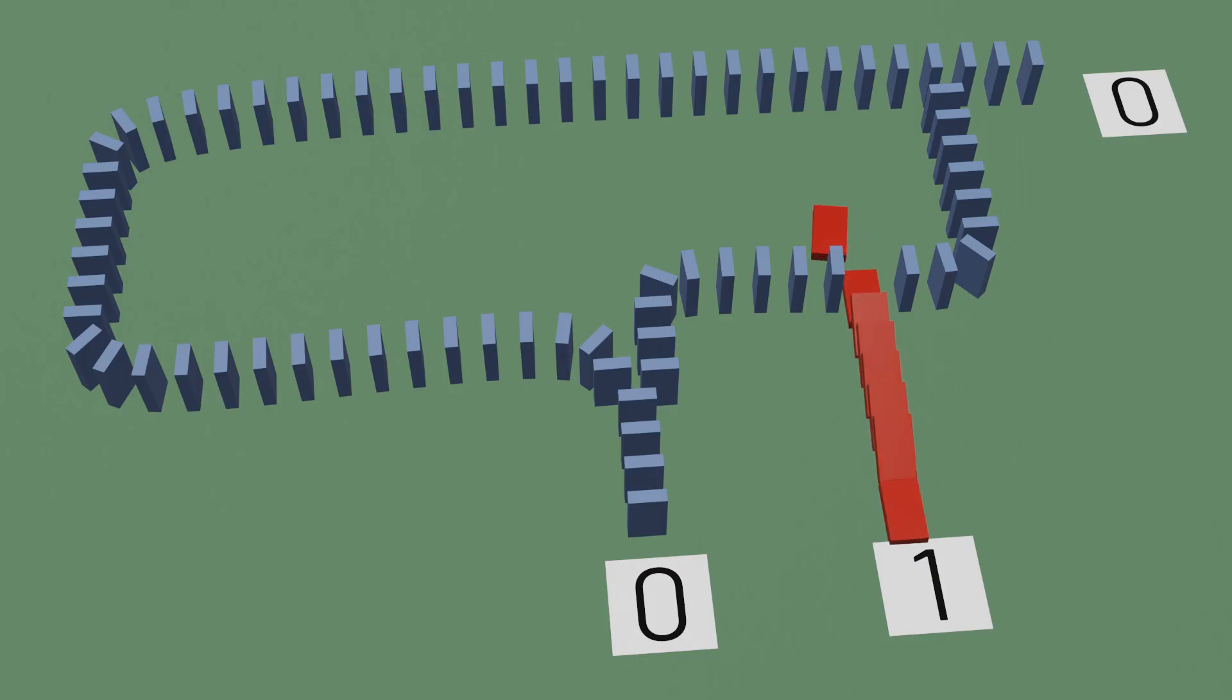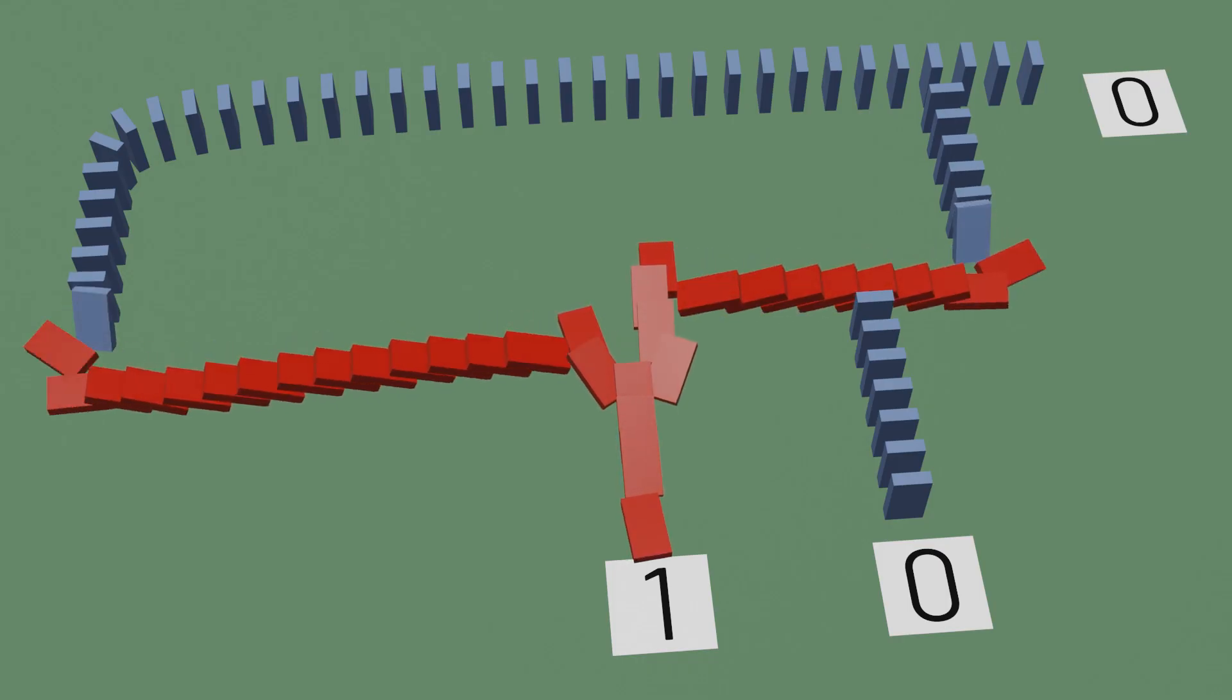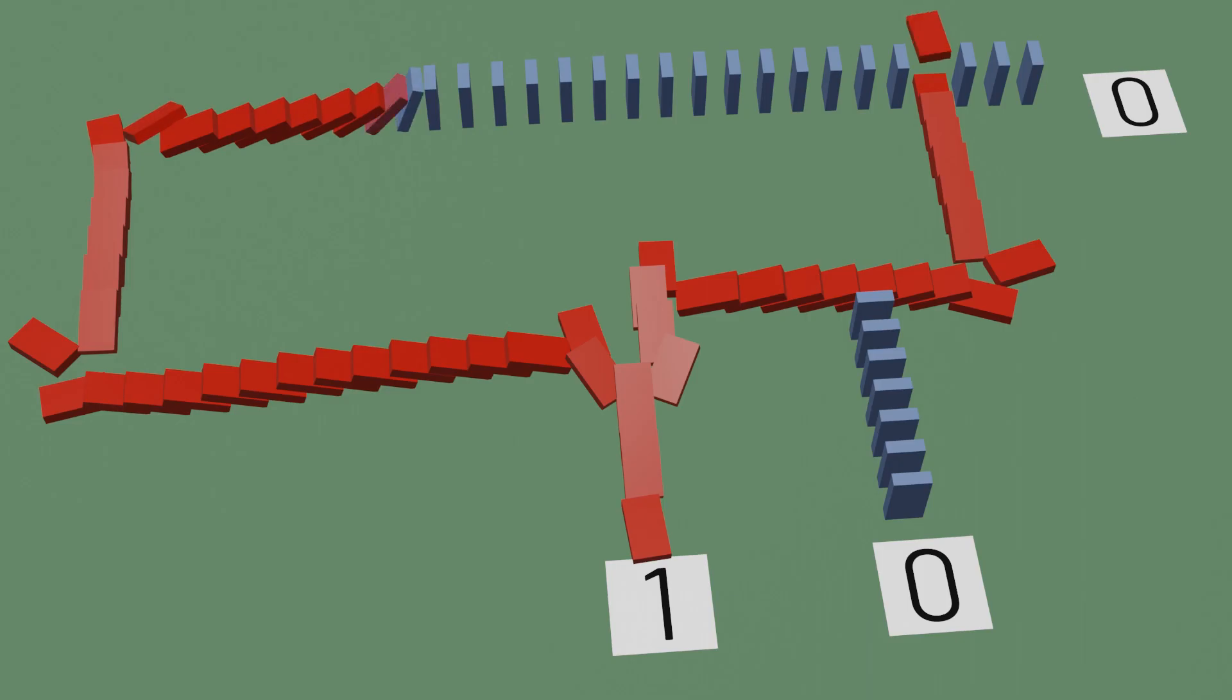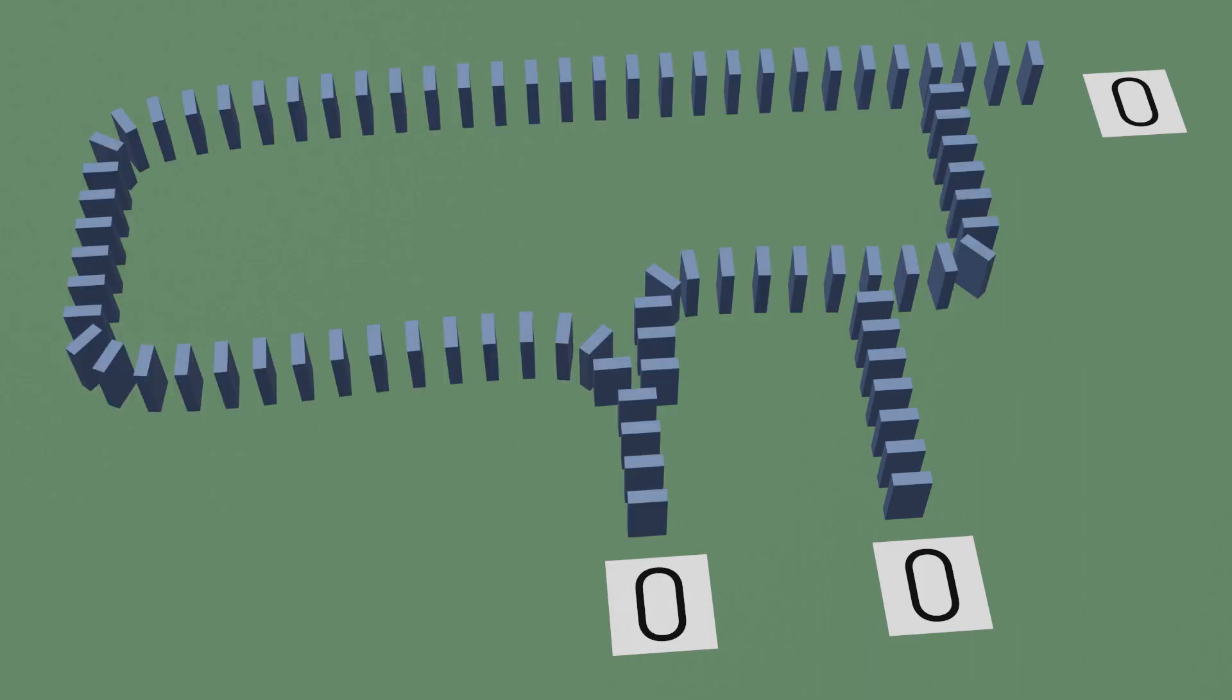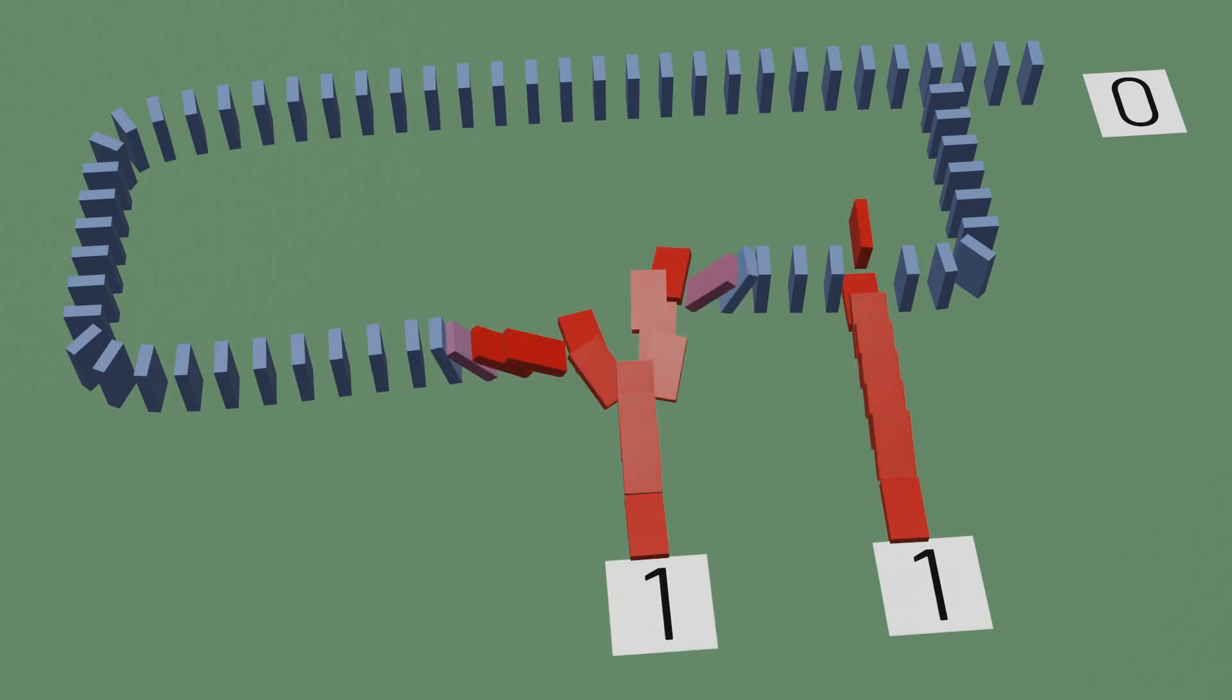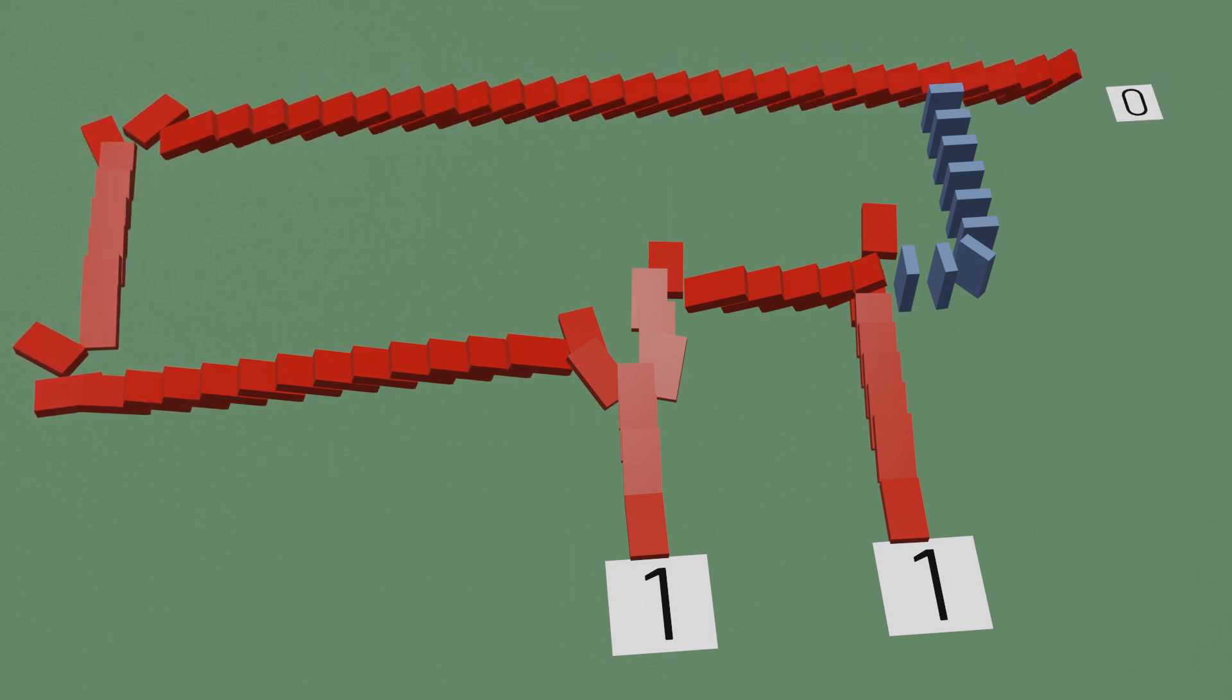If just the first input is pushed, we've already seen what happens. The interrupting path blocks the longer path, and nothing happens to the output as well. But if instead we push over both inputs, then the second input interrupts the interrupting path, so the longer path of the first input can make its way to topple over the output.